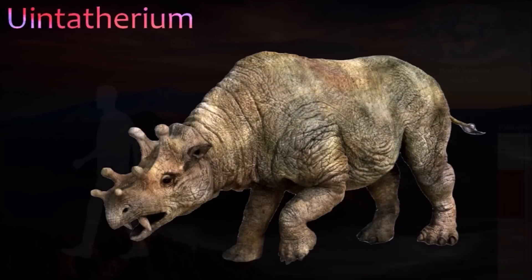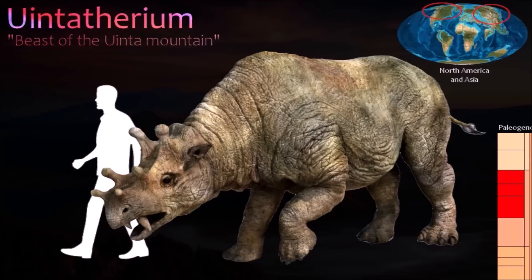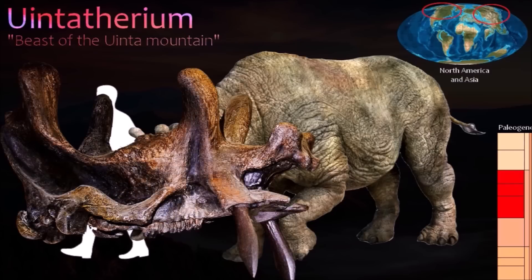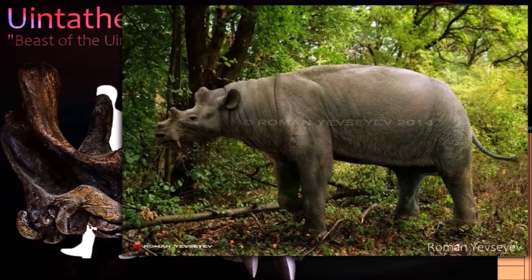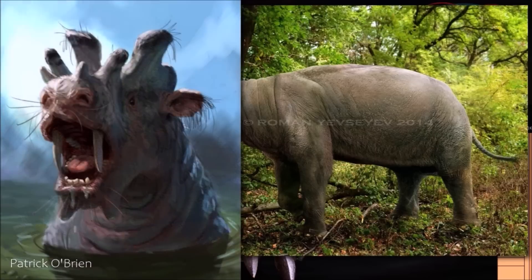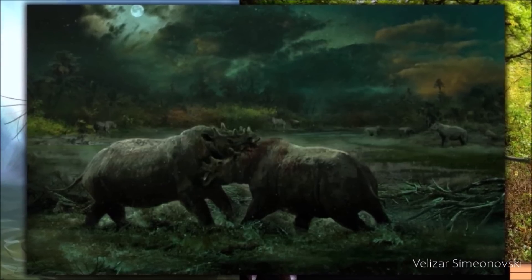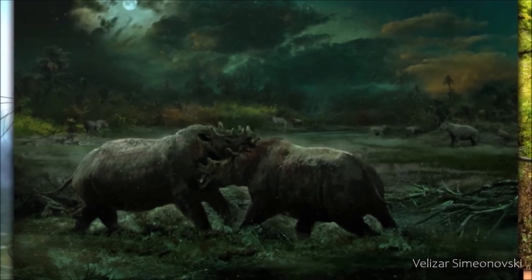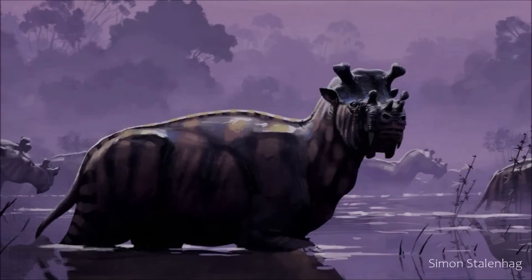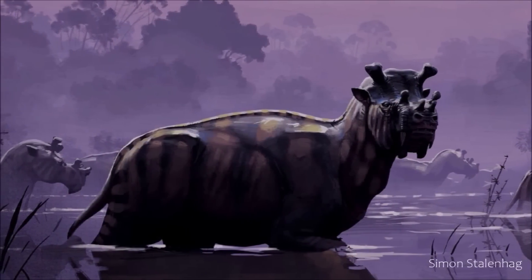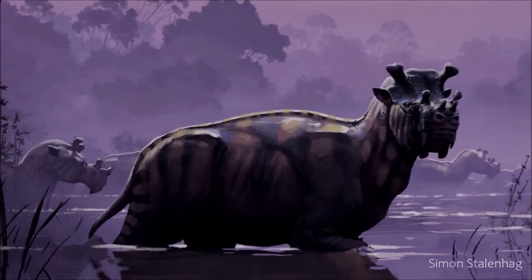Uintatherium was a giant horned mammal from the middle Eocene. Most of its fossils have been found in Utah and Wyoming, but it was widespread across North America and Asia. It had huge upper canine tusks that protruded downward, protected by a bony flange on the lower jaw. The snout had a series of blunt, horn-like growths. Like modern rhinoceroses, both sexes had horns, used for display and species recognition. Uintatherium has no living descendants, and where it fits in the family tree of hoofed animals is a controversial subject.